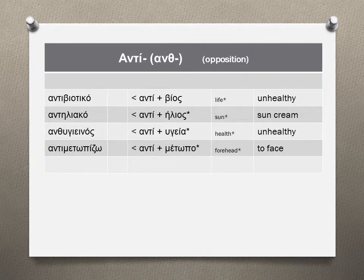The ANTI prefix should sound familiar. Let's think of the word ANTIBIOTIC in English — it means the medicine that fights against the life of invading bacteria in our body. As you most likely have guessed, ANTIBIOTIC is a Greek loan word. ANTIBIOTIKO is its Greek equivalent. VIOS in ancient Greek means life — that's how we get VIOLOGIA, BIOLOGY.